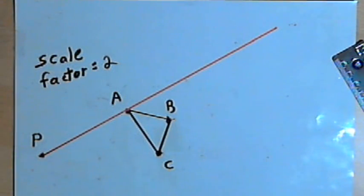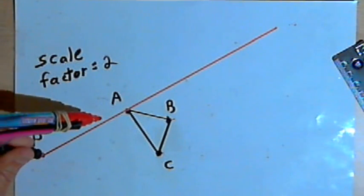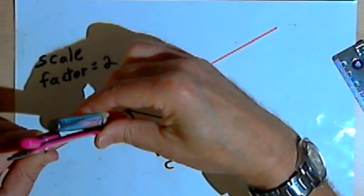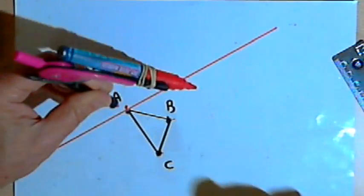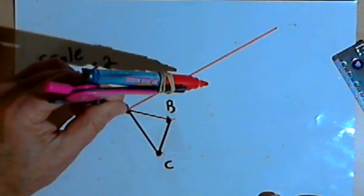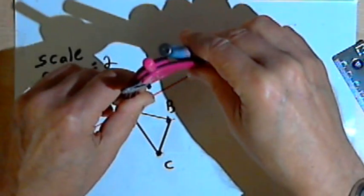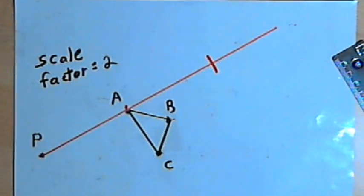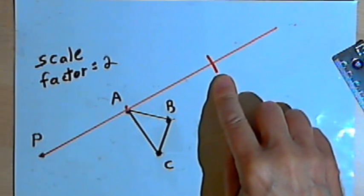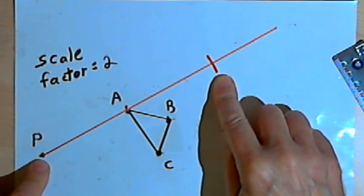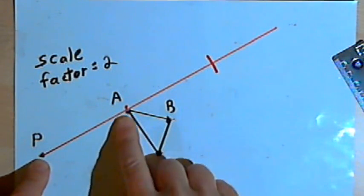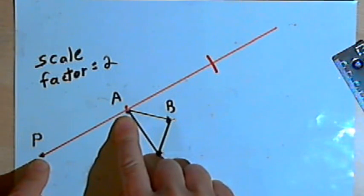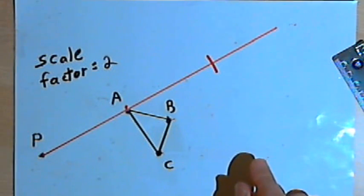Then I'm going to take my compass and set it so it's the same distance as line segment PA. I'll move the point of the compass over to point A and draw an arc along the line. Where that arc intersects the line is twice as far from point P as point A was. So I've dilated that line by a scale factor of 2.